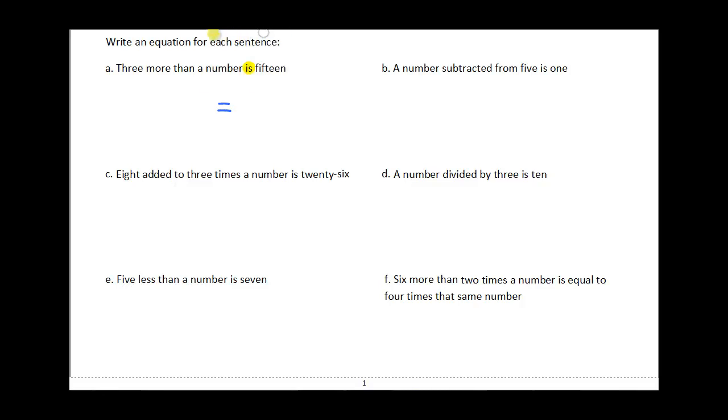So I can start off with my equal sign and then find your other two parts. Three more than a number is really on this side of the equation. If a number is n, then three more than that would be plus 3, and then on the other side of your equation we've got 15. So that's going to equal 15.